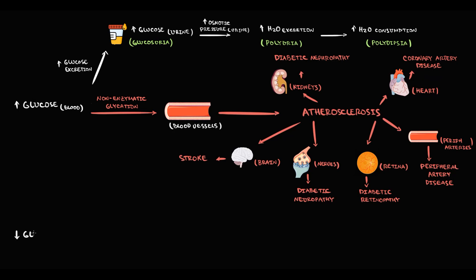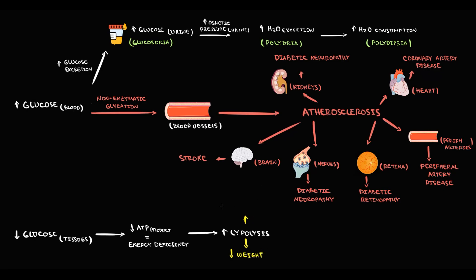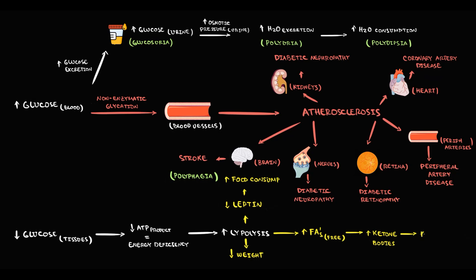The second component of diabetes is a decreasing amount of glucose in the tissues. Without sufficient glucose as fuel, energy production decreases, putting tissues in an energy-deficient state. In response, tissues activate lipolysis — degradation of adipose tissue — which first causes weight loss. With decreasing fat tissue, leptin secretion decreases, which stimulates food consumption, resulting in polyphagia. Lipolysis also results in massive release of free fatty acids, from which ketone bodies are made. The organism tries to compensate for decreasing glucose by increasing ketone body production, but increasing ketone bodies cause diabetic ketoacidosis.